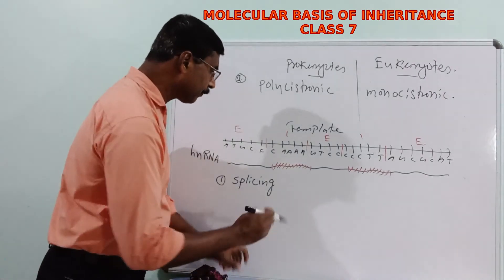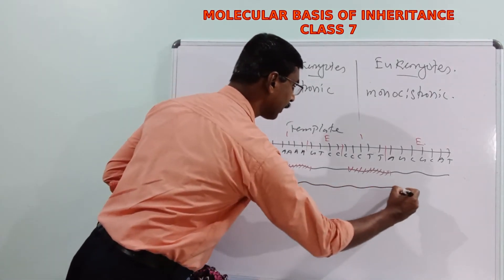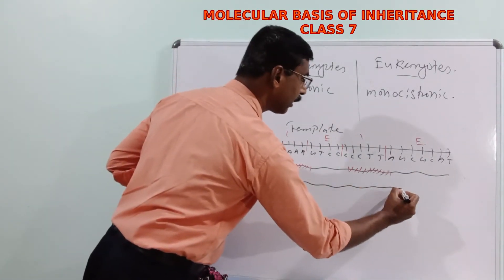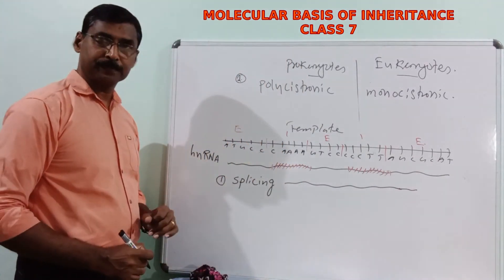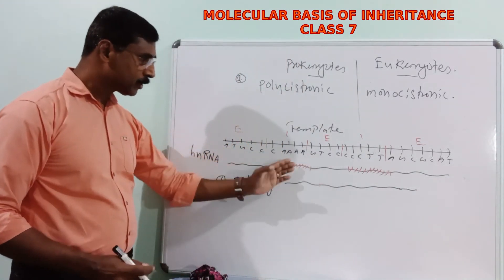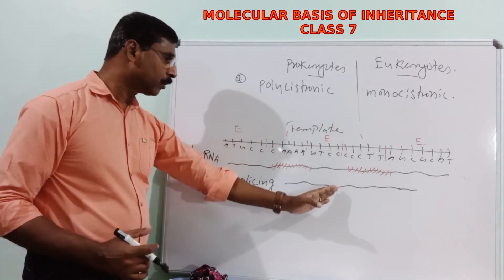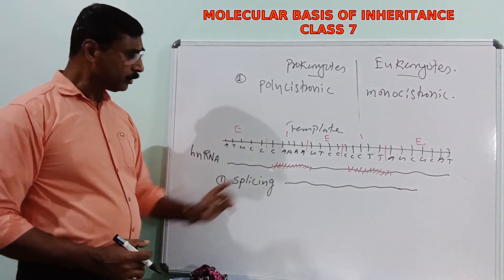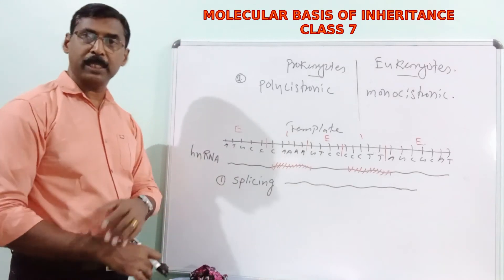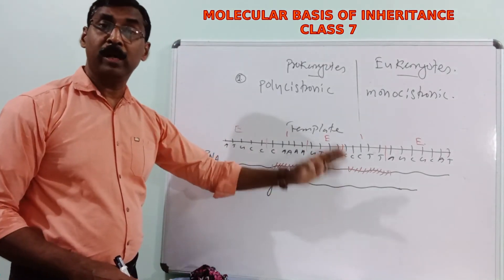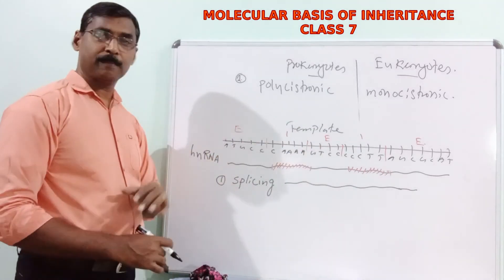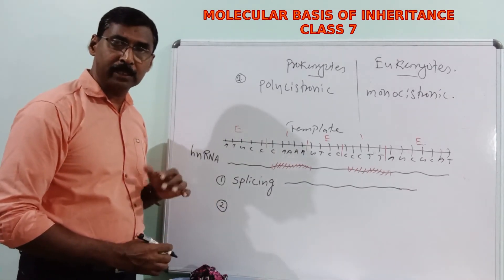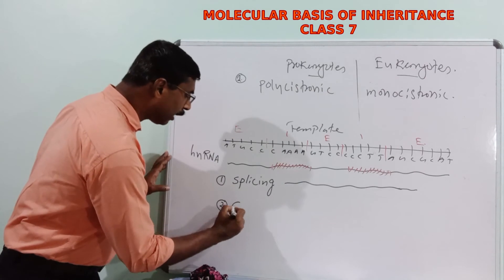After splicing, the HnRNA will contain only exons. The length of the HnRNA is reduced because introns are removed. The second post-transcriptional change is capping.